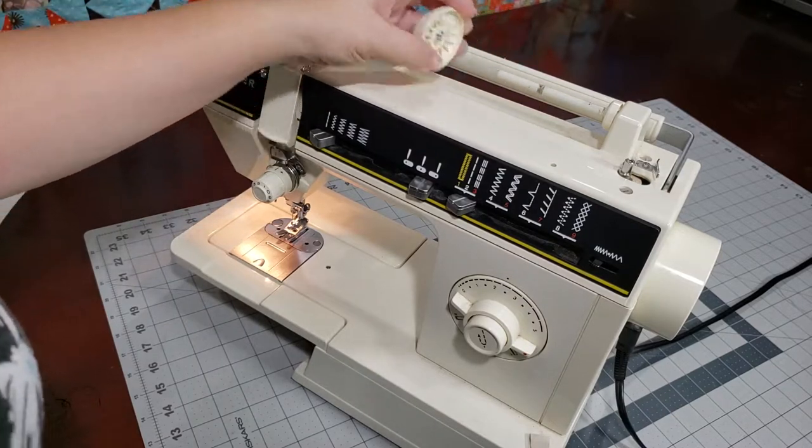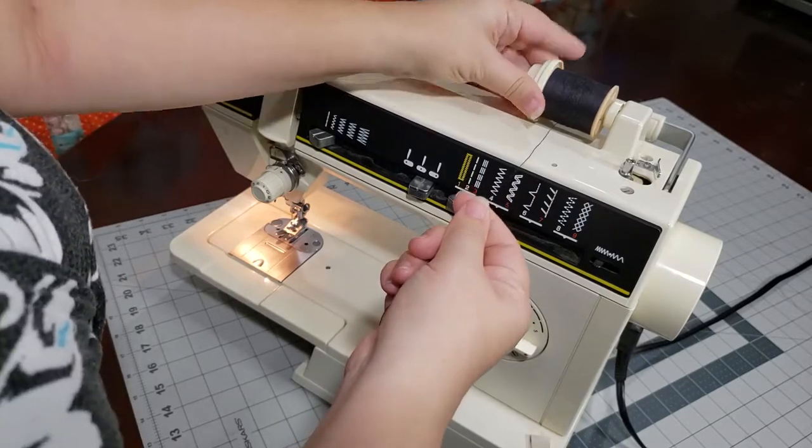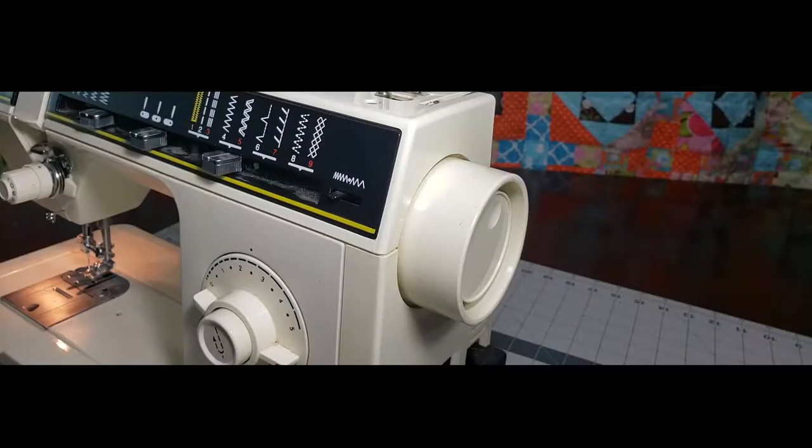Place a spool of thread on the spool pin and hold it in place with the spool cap. To stop the needle from moving when you're using the foot pedal, push the indent on the hand wheel.